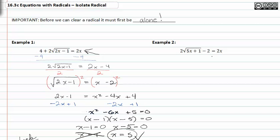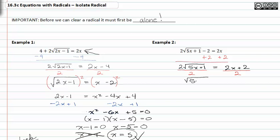Moving on to example two. First we need to isolate the square root, so I'm going to add two to both sides, and that gives me two times the square root of five x plus one equal to two x plus two. Divide both sides by two and I get the square root of five x plus one is equal to x plus one. Now I can raise both sides of my equation to the second power. This undoes the square root, and I have five x plus one is equal to x squared plus two x plus one, found by foiling x plus one times x plus one.